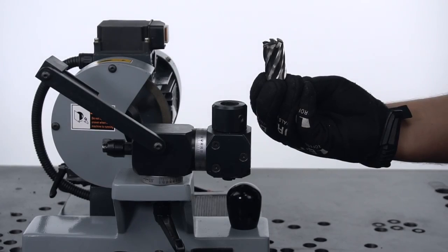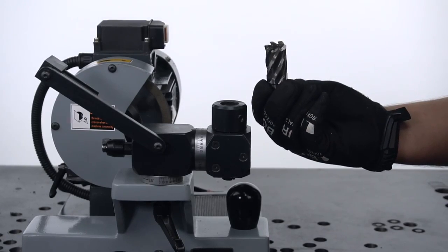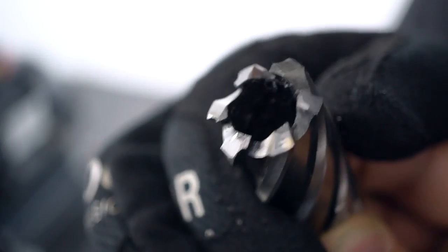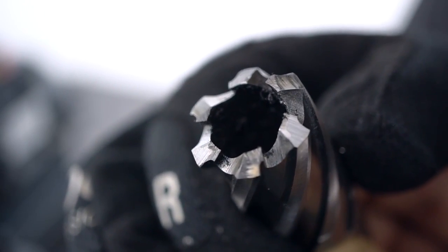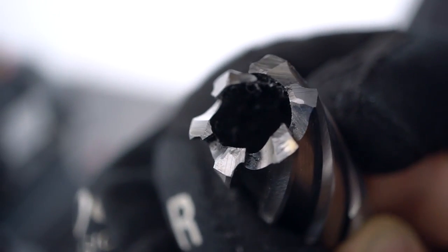Today we're going to resharpen this Eurobore HSS angular cutter of 22mm diameter. The cutter has 6 teeth and as you can see, this cutter has done its job and it's time to be resharpened.